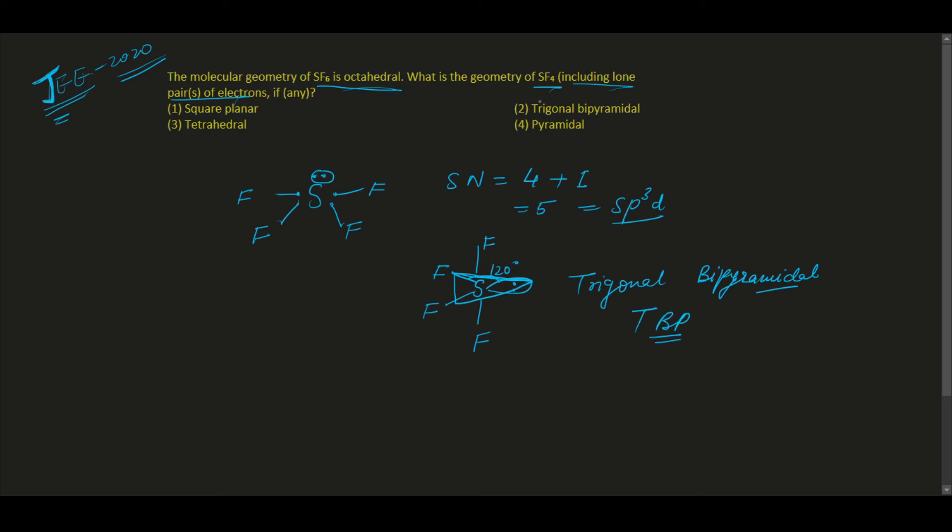So the second option is the correct option. And first of all, just know why we are placing the lone pair here. Because this angle is 120 degrees and this angle is 90 degrees. And lone pair at 120 degrees shows less repulsion than lone pair at 90 degrees. That's why we are putting the lone pair at 120 degrees, not at 90 degrees. So this answers your question. Thank you.